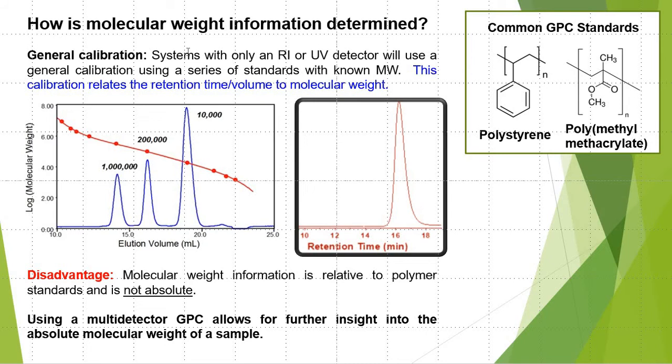A series of polymer standards, often polystyrene or polymethylmethacrylate, will be run through the instrument first. As shown here on the left, using the instrument software, it will create a calibration curve which relates the molecular weight of the standard to its retention time or elution volume.